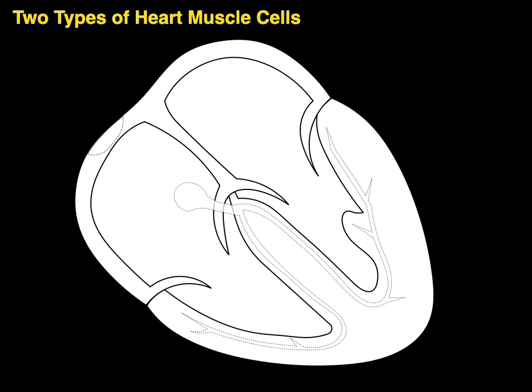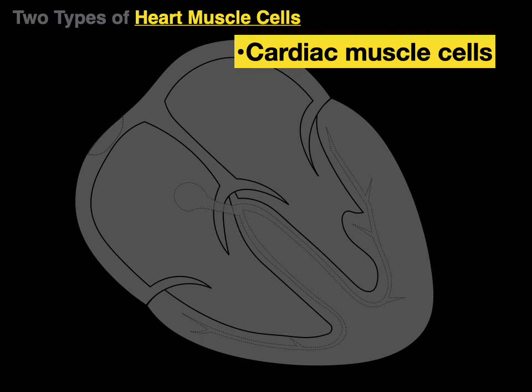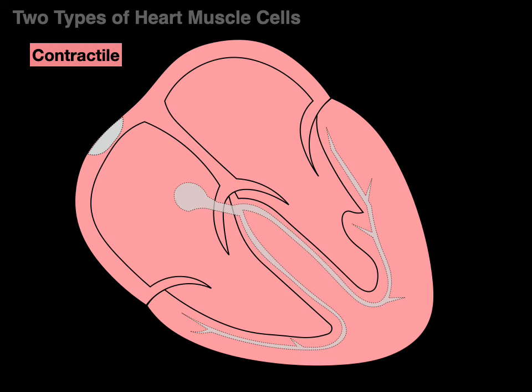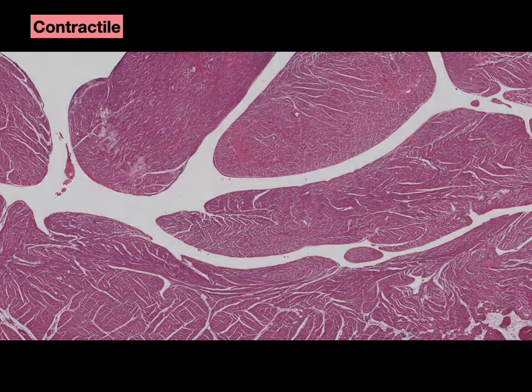There are two types of heart muscle cells, also known as cardiac muscle cells or cardiomyocytes — each of those terms are synonymous. There are the contractile cells, like we see in the atria and the ventricles.